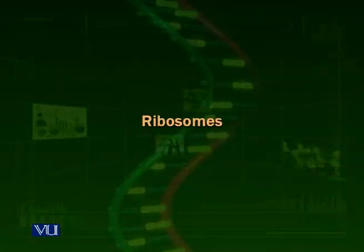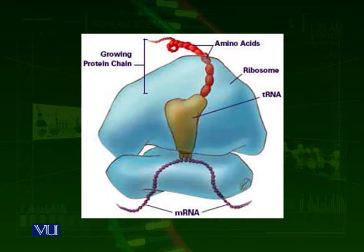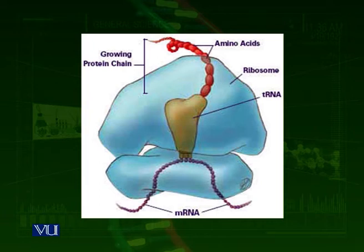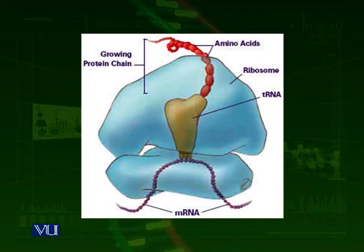The next organelle is the ribosome. Ribosomes are the organelles which make proteins. They consist of two subunits — one large and one small. They can read the messenger RNA, which is made by the DNA, and they make proteins. They are present in the cytoplasm either free or attached to the endoplasmic reticulum. Metabolically more active cells may have more ribosomes, and less active cells may have fewer.